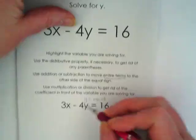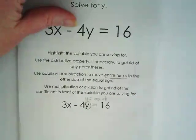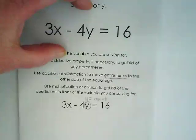So if we're solving for y, I want us to follow the directions. We're going to highlight it. I'm just going to highlight it by circling it. The second step is to use distributive property, if necessary, to get rid of parentheses. Do we see any parentheses in this problem? No.